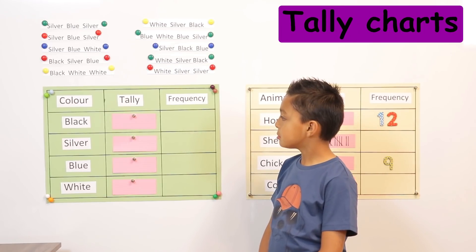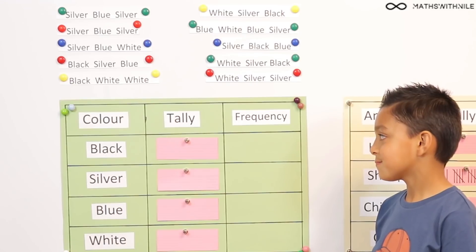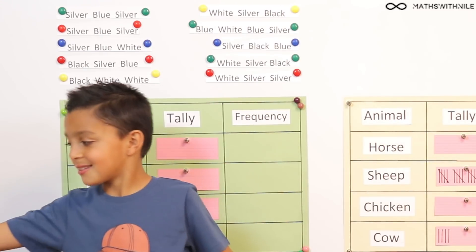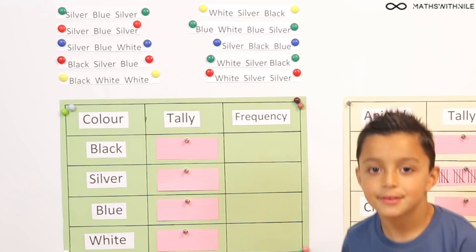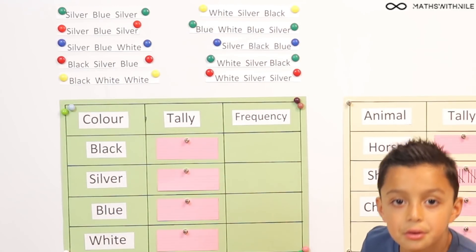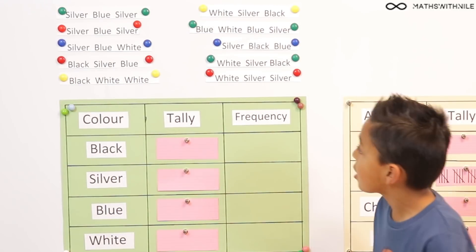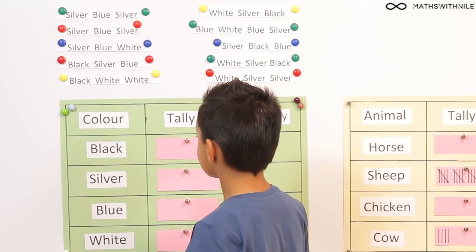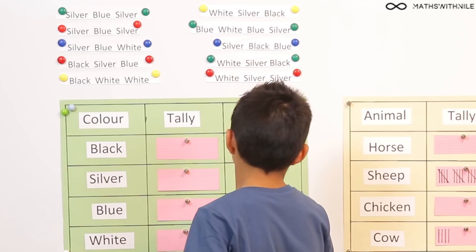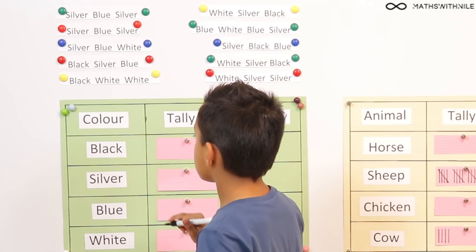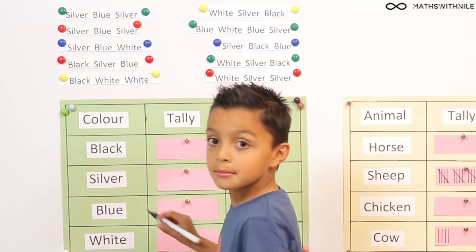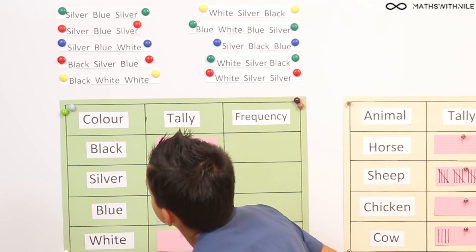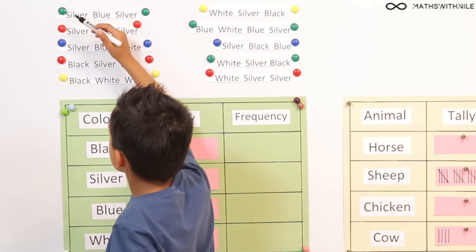So the first thing I want you to do is to grab your whiteboard pen. Okay, good. So you're going to go to your colours, your information on top, and you're going to cross out the first colour. So what's the first colour? Silver. So you're going to cross the silver out, and when you cross it out there, you're going to put one stroke. Is that across this? Yes.